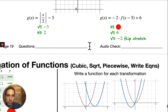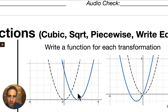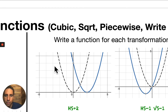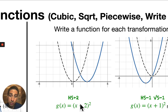Let's write a function for each transformation — kind of going backwards from what we've done before. We're given the graph, and the original is the dotted black line. The blue is a horizontal shift of plus 2. We know it's a parabola shape, so g of x, the transformed function, would be x minus 2 squared. It's minus 2 because we're taking the opposite of plus 2.